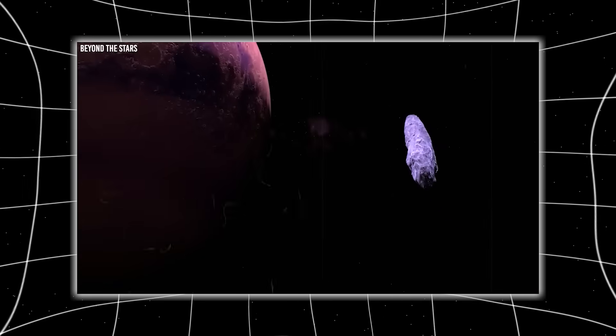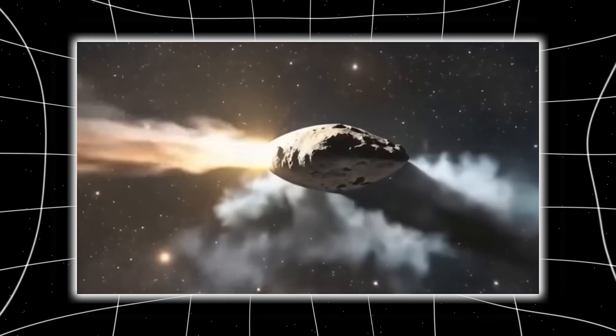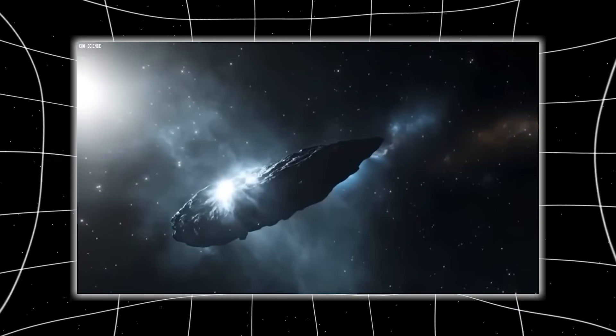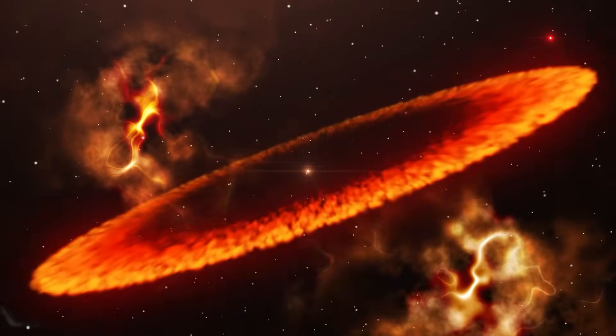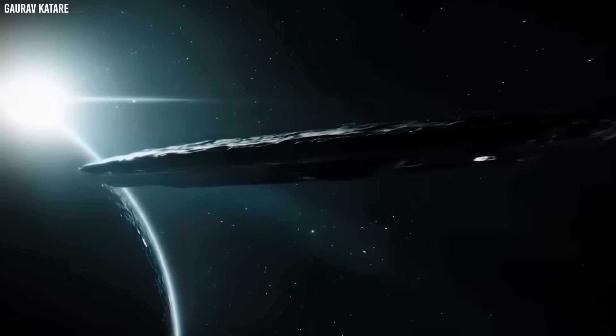And yet 3i Atlas remains intact, not cracked, not fragmented, not even noticeably diminished. A natural object undergoing this degree of erosion should be obliterated. So why isn't this one?